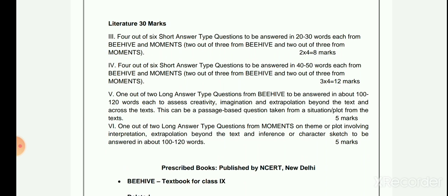Literature is of 30 marks. In Section 3, four out of six short answer questions are to be attempted, carrying 2 marks each with a word limit of 20 to 30 words. In Section 4, four out of six short answer questions are to be answered with a word limit of 40 to 50 words — three from Beehive and three from Moments, carrying 12 marks. There will also be one or two long answer type questions from Beehive.